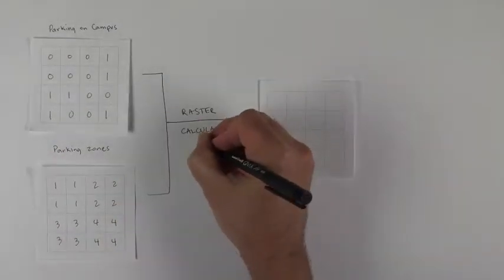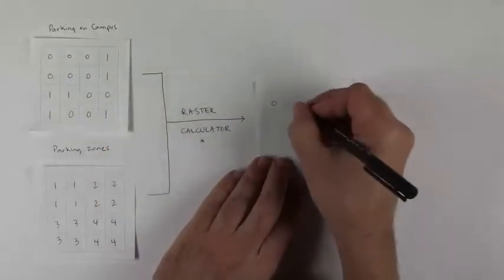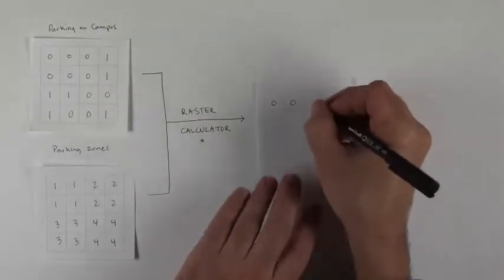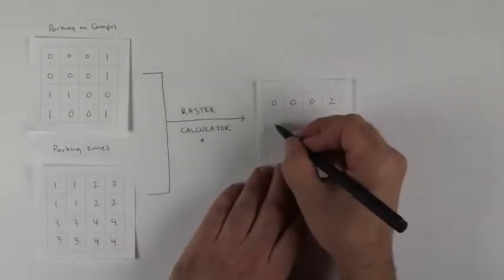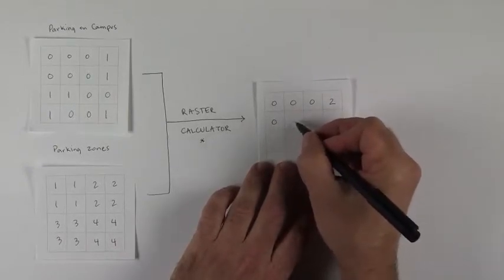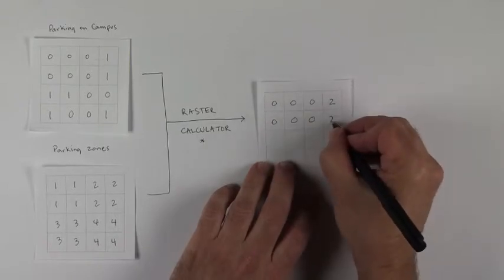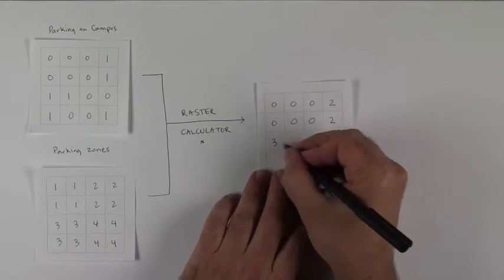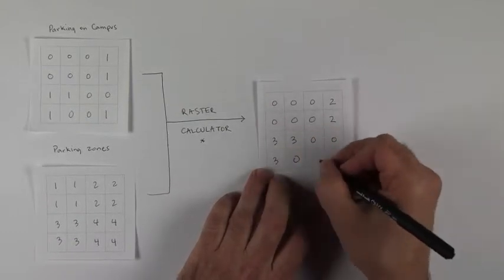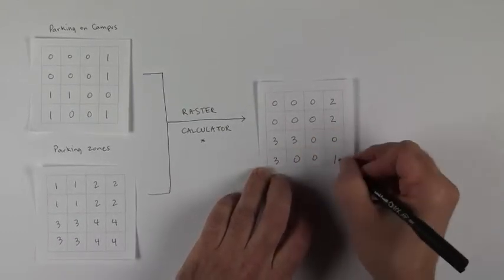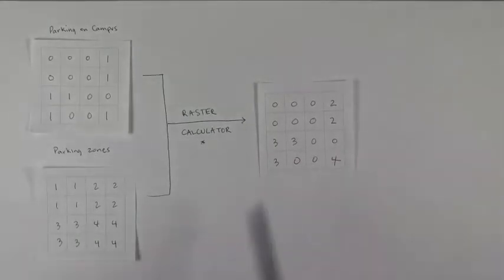And in this case, our operation was multiply. So zero times one, zero. Zero times one, zero. Zero times two, zero. This guy, two. What's this guy? What's this guy? What's this guy? This one? Fair enough. Just kidding. Right? So two, four, threes.